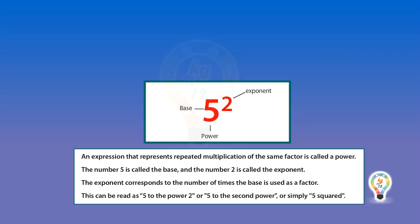This can be read as 5 to the power 2, or 5 to the second power, or simply 5 squared.